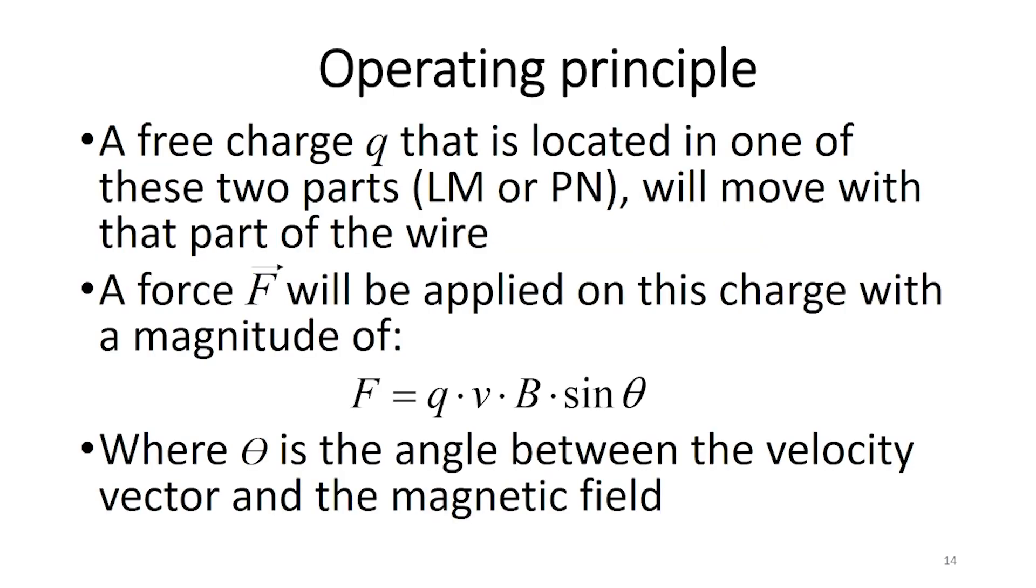A free charge Q that is located in one of these two parts, Lm or Pn, will move with that part of the wire. A force F will be applied on this charge with the magnitude of F equals Q times V times B times sine theta, where theta is the angle between the velocity vector and the magnetic field.